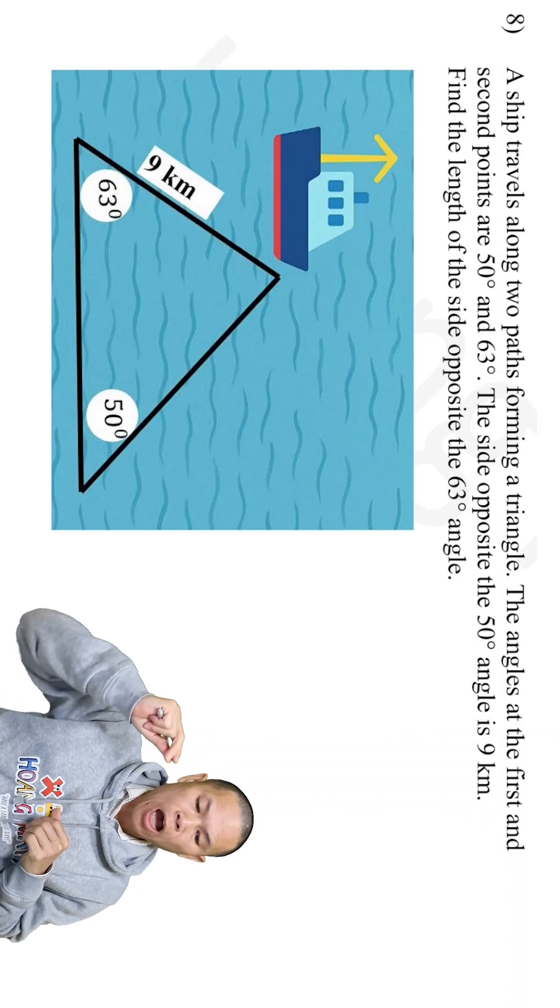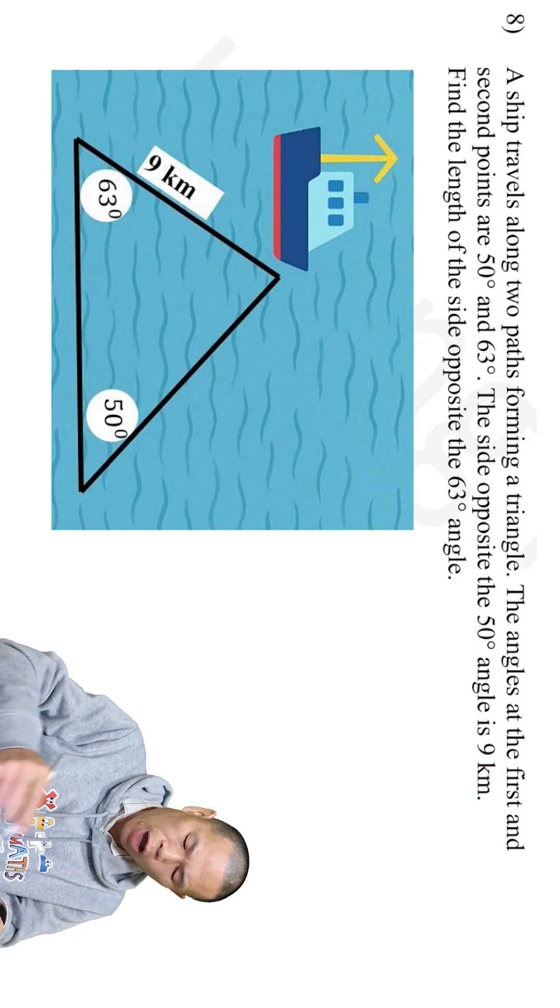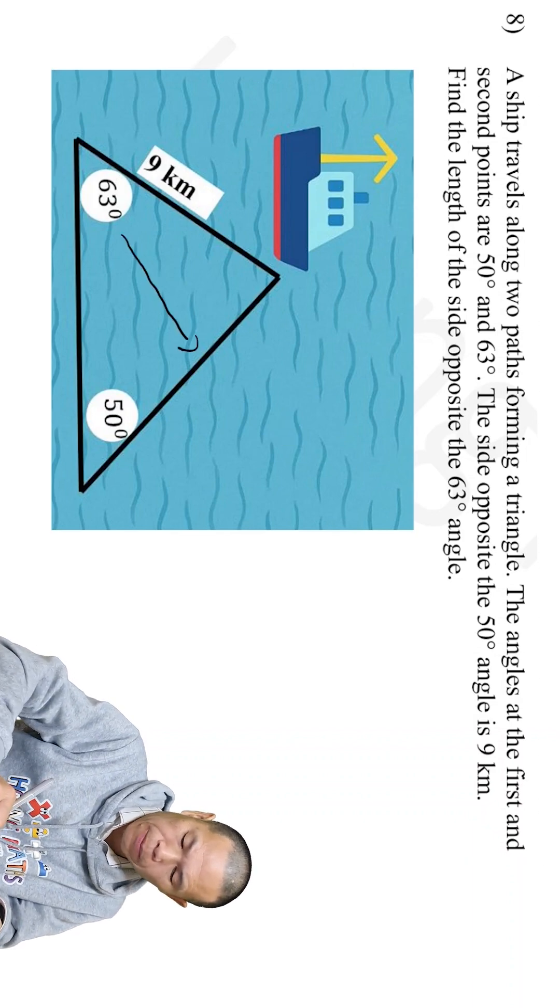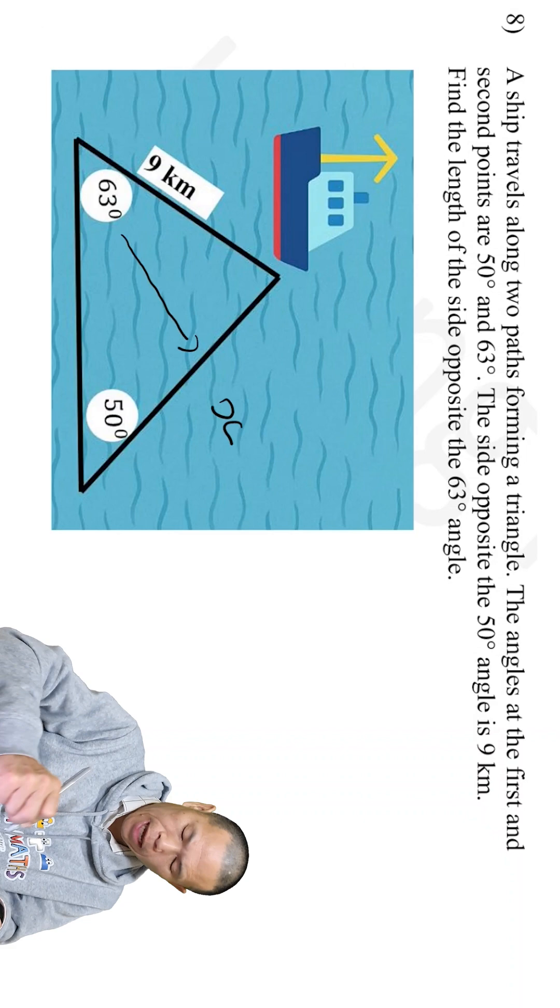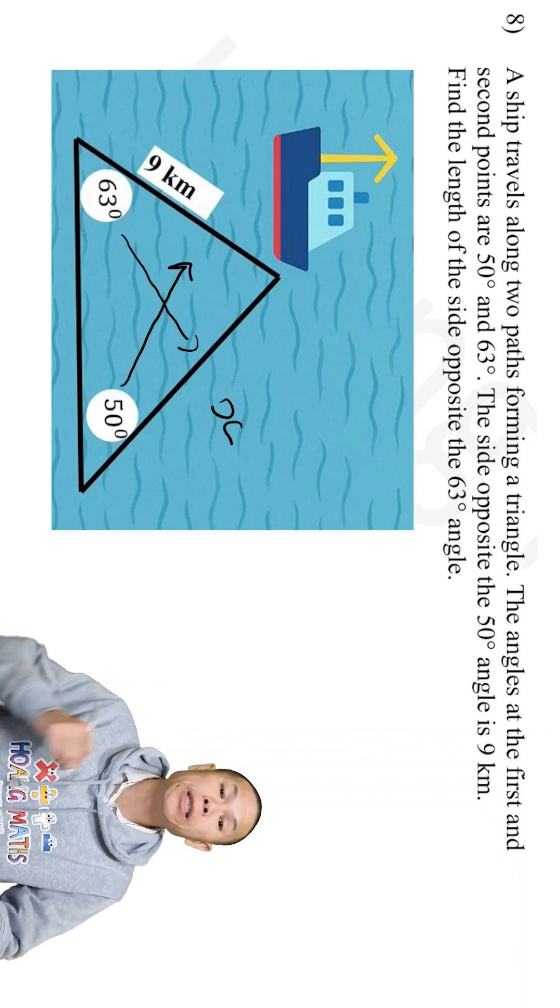We need to find the length of the side opposite 63 degrees. So opposite 63 degrees is this one here. Let me just label it X. And we have 9 kilometers, that is opposite 50 degrees.